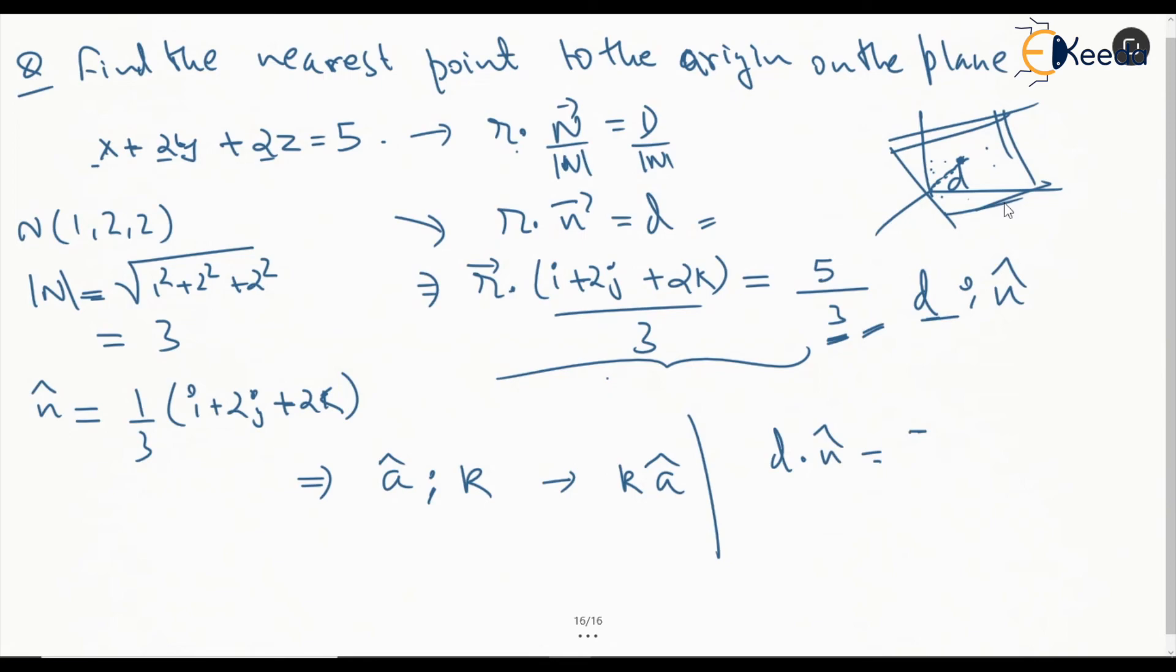So, this is 5 by 3 times 1 by 3 of i, 2j and 2k. So, this can be written as 5i plus 10j plus 10k divided by 9.